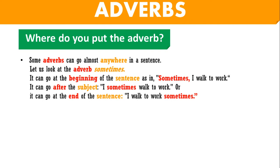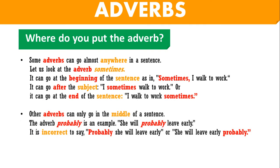Other adverbs can only go in the middle of a sentence. Let's look at the adverb 'probably.' For example: 'She will probably leave early.' It goes between the subject and the main verb. It is incorrect to say 'Probably she will leave early' or 'She will leave early probably.' Remember that 'probably' can only go between the subject and the main verb.